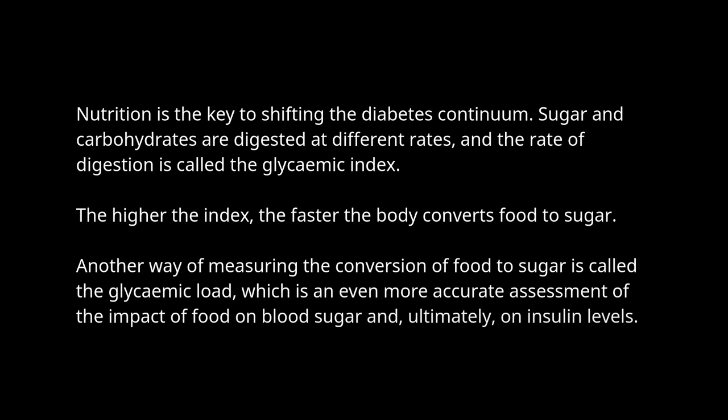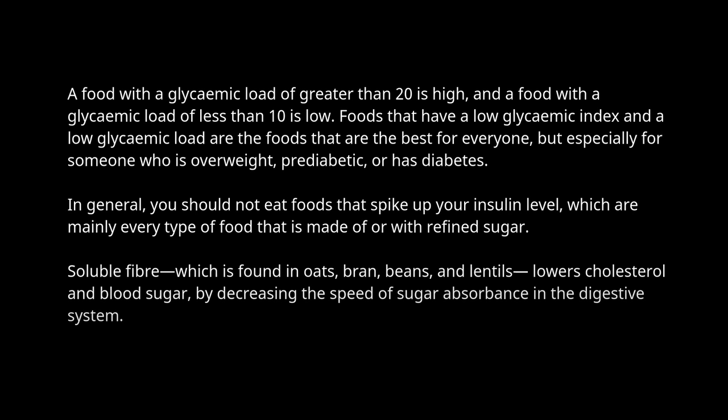Nutrition is the key to shifting the diabetes continuum. Sugar and carbohydrates are digested at different rates, and the rate of digestion is called the glycemic index. The higher the index, the faster the body converts food to sugar. Another way of measuring the conversion of food to sugar is the glycemic load, which is an even more accurate assessment of the impact of food on blood sugar and, ultimately, on insulin levels. A glycemic load greater than 20 is high, and less than 10 is low. Foods with a low glycemic index and low glycemic load are best for everyone, but especially for someone who is overweight, pre-diabetic, or has diabetes.